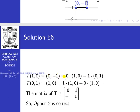T(1,0) = (0,−1) expressed in terms of the basis: 0×(1,0) + (−1)×(0,1), giving first column (0,−1). T(0,1) = (1,0) expressed as 1×(1,0) + 0×(0,1), giving second column (1,0). So the matrix of T is [[0, 1],[−1, 0]]. Therefore option 2 is the correct answer.